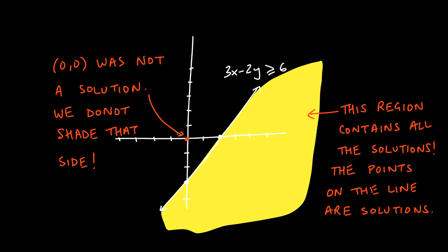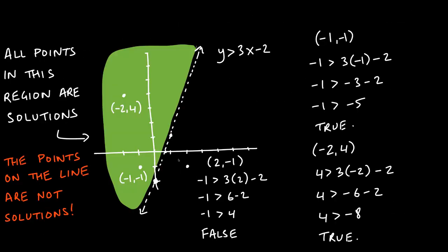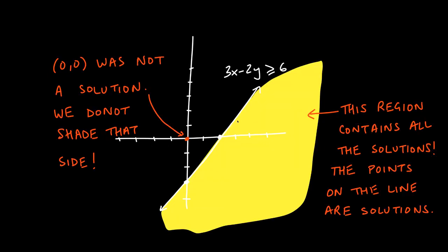Since the origin gave a false statement, shade the other side — the region below and to the right of the line. All points in that shaded yellow region are solutions. Also, because the inequality is ≤ (less-than-or-equal-to), points on the line itself are also solutions. For example, plugging in (2, 0): 3(2) - 2(0) = 6 ≤ 6, which is true. That's why we use a solid line here — it's included in the solution set — versus the dotted line in the previous example.